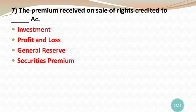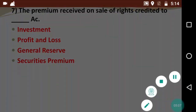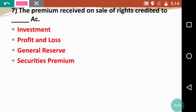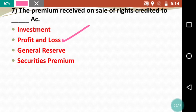Next question: The premium received on sale of rights is credited to which account? Options are investment account, profit and loss account, general reserve account, or securities premium account. The premium received on sale of rights will be credited to the profit and loss account.